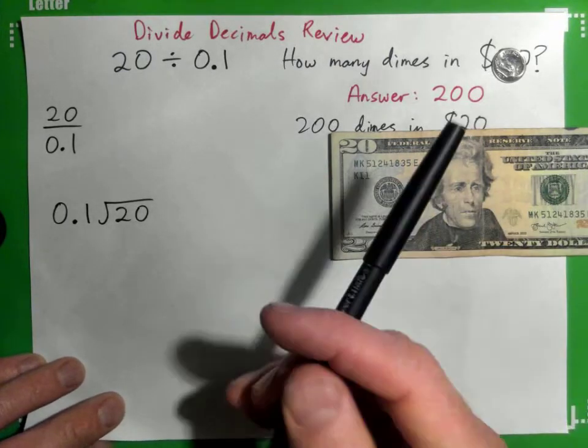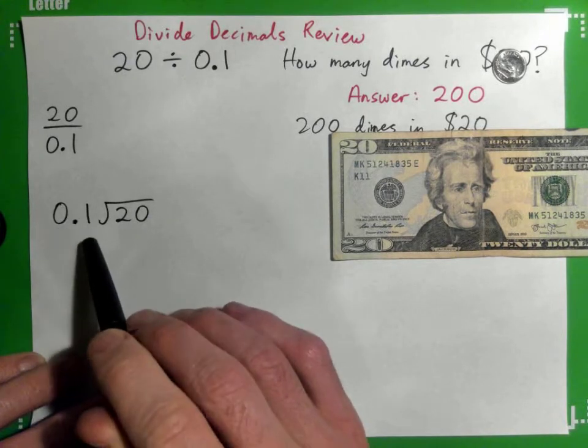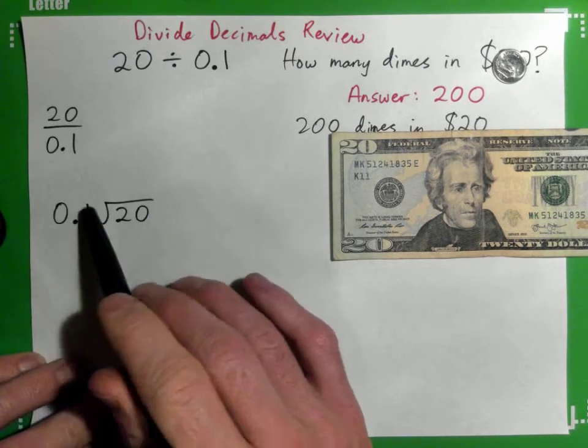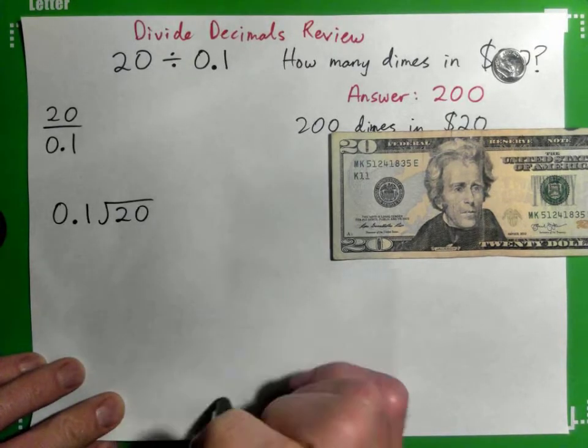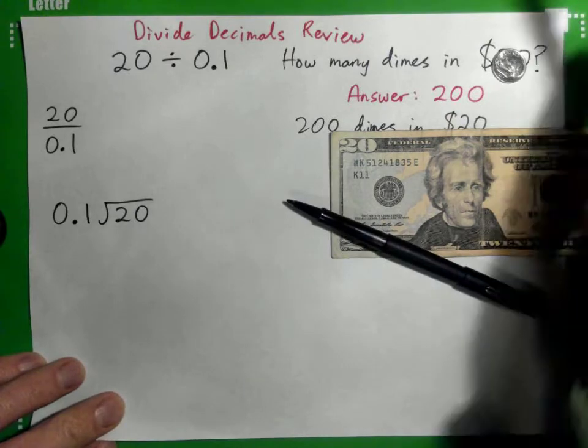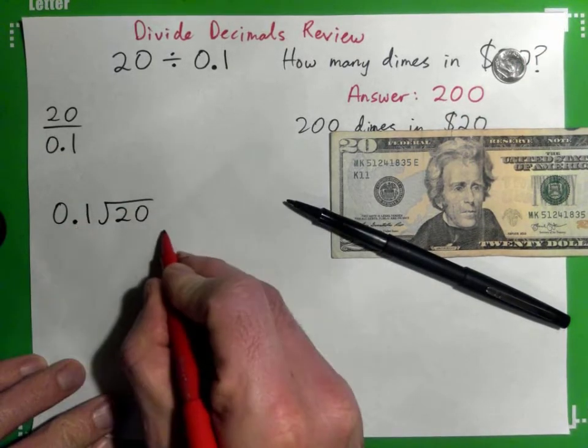Now when we go to do long division, the problem is we can't because if there's a decimal here, that's not easy to do. We would like to turn this into a whole number. If I want to turn this into a whole number, do I move this decimal point to the right or to the left? To the right.